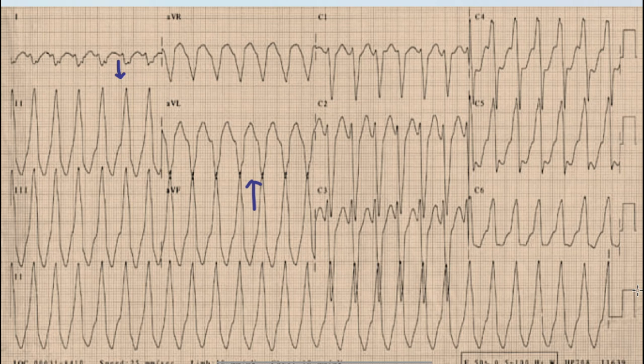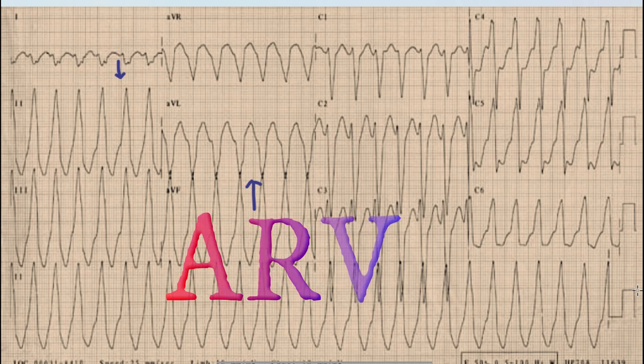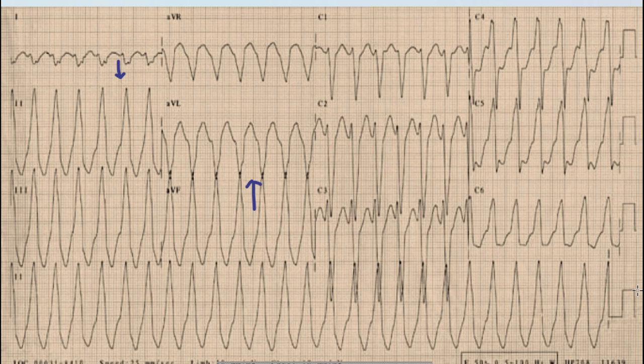The importance of diagnosing right ventricular outflow tract ventricular tachycardia (RVOT VT) is that it could be associated with arrhythmogenic right ventricular cardiomyopathy (ARVC), which is a deadly condition requiring placement of an implantable cardioverter-defibrillator. If the echo is normal and the patient does not have ARVC or does not fulfill the 2010 Task Force criteria for ARVC, the second important point is that RVOT VT is usually sensitive to beta blockers.